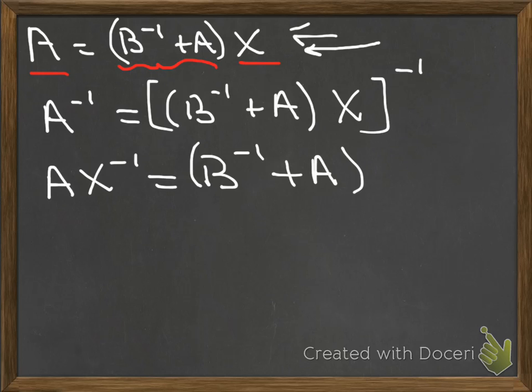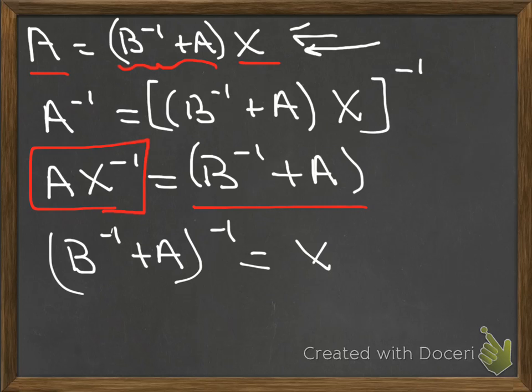this B^(-1) plus A is a product of invertible matrices, and so if we have a product of invertible matrices, we know from our theorem that the matrix has to be invertible. If A and X^(-1) are invertible, then (B^(-1) + A)^(-1) must be equal to XA^(-1), so this proves that B^(-1) plus A is invertible.